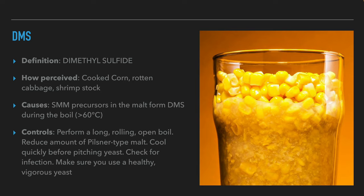The next off flavor is dimethyl sulfide or DMS for short. This compound is perceived as cooked corn, rotten cabbage or shrimp stock. This compound is created during the boil from precursors coming from the malt. This reaction happens at above 60 degrees Celsius. The good part is that this compound is highly volatile and will evaporate during the boil. To avoid this compound in the beer, the brewer should perform a long rolling open boil.